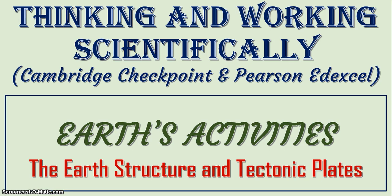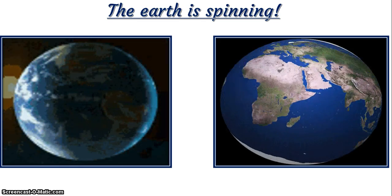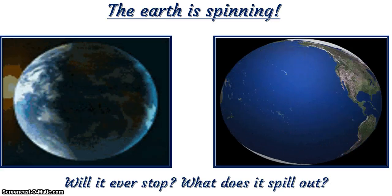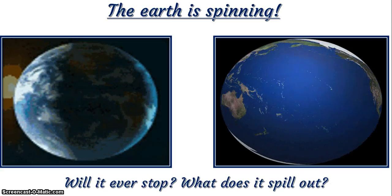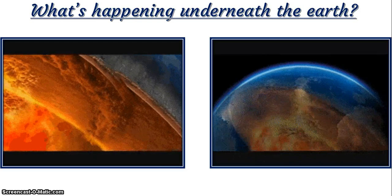Do you know that the Earth is divided into boundaries which we don't seem to see? These boundaries are called tectonic plates. And as you go down towards the center of the Earth, it is also divided into layers. Today we shall be looking at this and how they trigger some natural phenomena. You know the Earth is spinning — you're familiar with the rotation and revolution of the Earth — but as it spins, does it spill out anything? Well, let's find out. But before we do this, it's very important we know what's happening underneath the Earth.